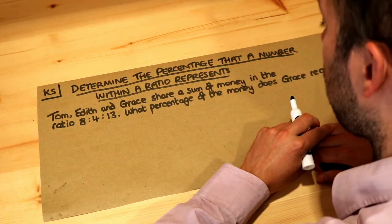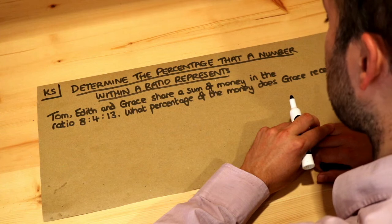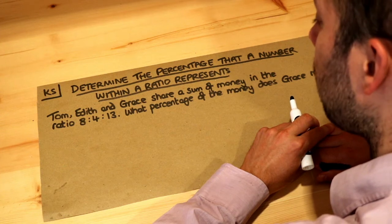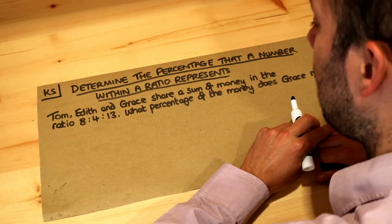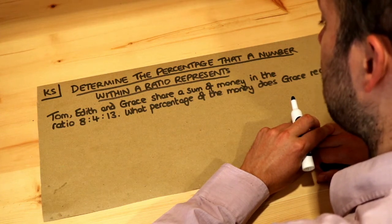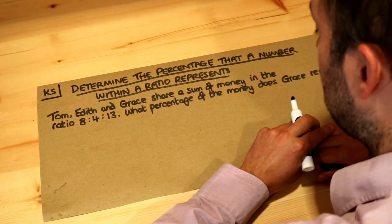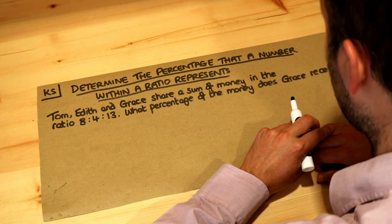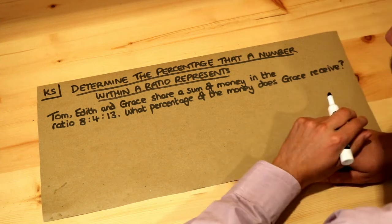Tom, Edith and Grace share a sum of money in the ratio 8 to 4 to 13. What percentage of the money does Grace receive?